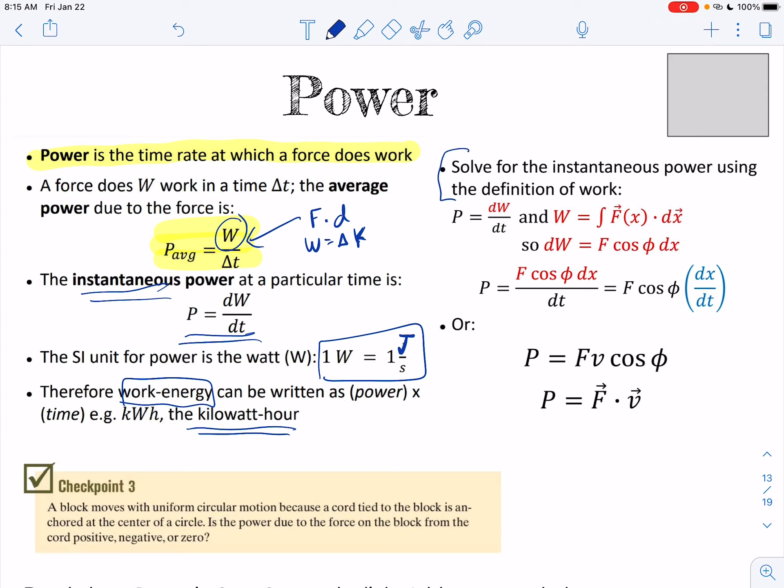The other thing, if you want to find instantaneous power, if they ask for that instead of average power, that's when you would take the derivative of work. Which is just F times dx is work. And then basically what you're doing, if you can kind of see, if I switch this around, I can end up with this dx dt term, which is basically just the velocity instantaneously at that point.